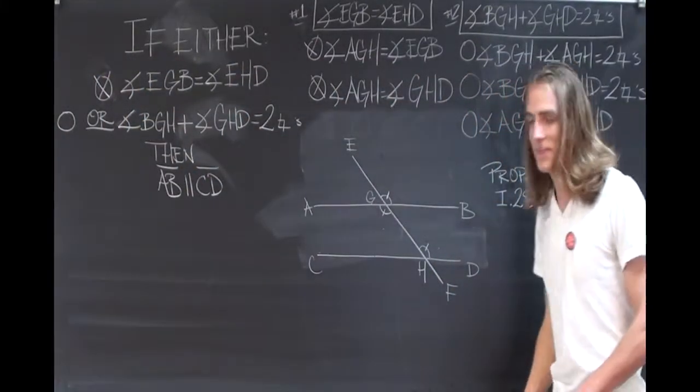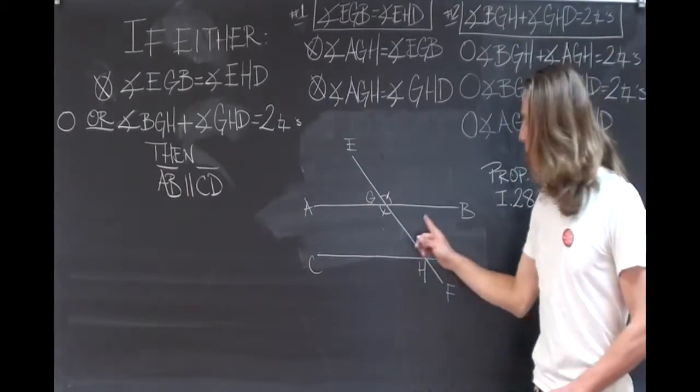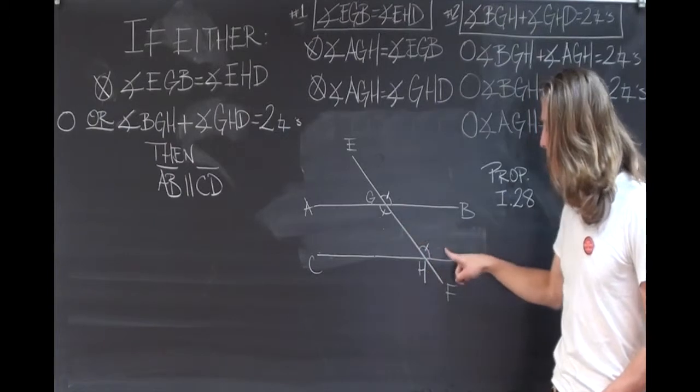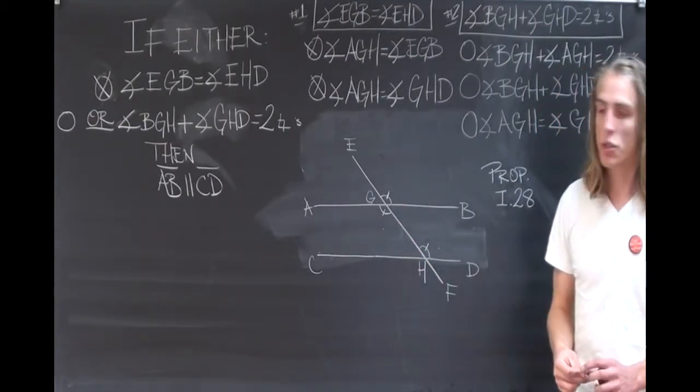Now, case number two. If the interior angles, BGH and GHD, add up to two right angles,